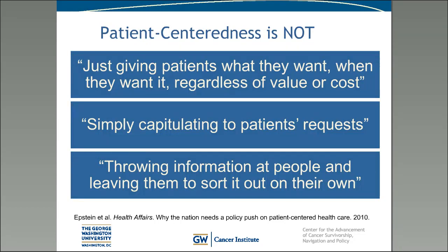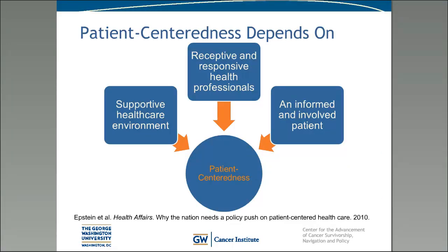It's equally critical to understand what patient-centeredness is not. According to Epstein et al., patient-centeredness is not just giving patients what they want when they want it regardless of value or cost; it's also not simply capitulating to patients' requests; and it's certainly not throwing information at people and leaving them to sort it out on their own. Patient-centeredness depends on three things: a supportive healthcare environment, receptive and responsive healthcare professionals, and an informed and involved patient. Patient-centered quality improvement should focus on all three of these areas.